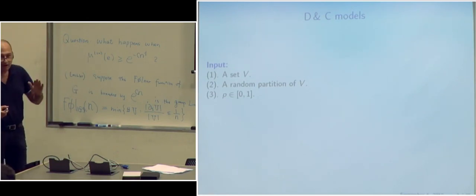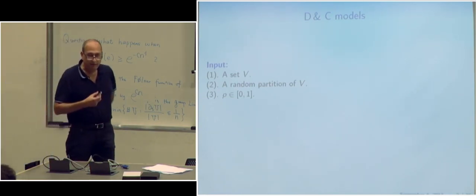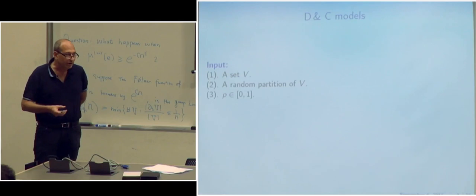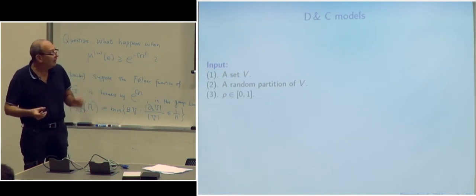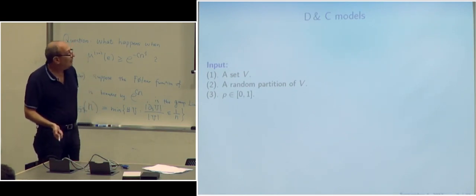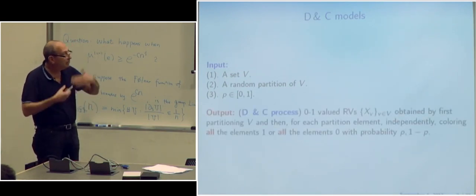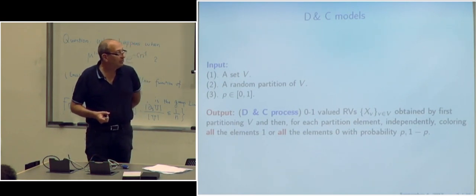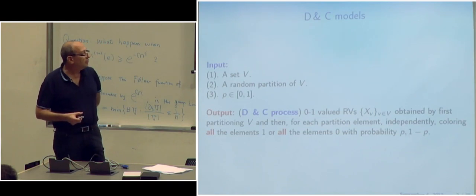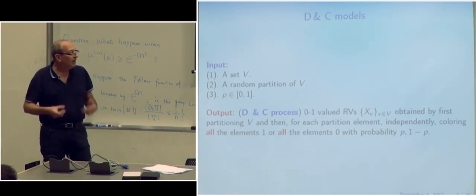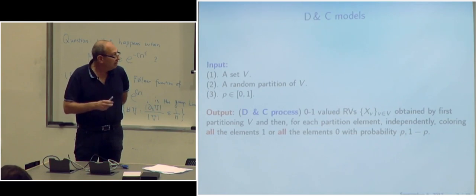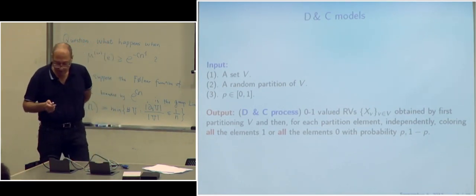D and C stands for divide and color model. The model is extremely simple. We have a set V, either finite or countable, and we have a random partition of V. The random partition can have any distribution you want. We have a parameter P in (0,1). With that input, we get an output: the corresponding divide and color model. These are 0,1-valued random variables X indexed by V, obtained by first partitioning V, then for each partition element independently coloring all elements 1 or all elements 0, with probability P and 1 minus P respectively.